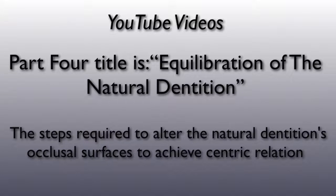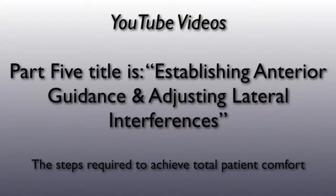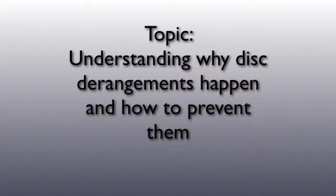Part four is titled Equilibration of the Natural Dentition, and it covers the steps required to alter the natural dentition's occlusal surfaces to achieve centric relation. Part five is titled Establishing Anterior Guidance and Adjusting Lateral Interferences, and it is about the final steps required to achieve total patient comfort. So let's now discuss the rationale for why we think disc derangements happen and how to prevent them.